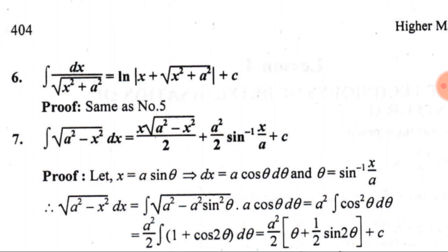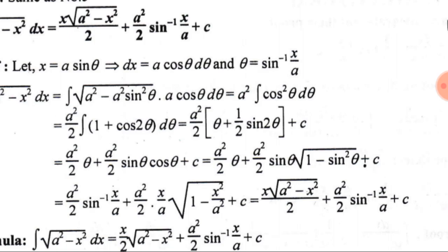Writing 2cos²θ = 1 + cos 2θ and balancing by putting a²/2 in front, we integrate: the integral of 1 with respect to θ is θ, and the integral of cos 2θ is sin 2θ / 2, plus C. Substituting θ = sin⁻¹(x/a), and writing sin 2θ = 2·sin θ·cos θ, we get (a²/2)·sin⁻¹(x/a) + (a²/2)·sin θ·cos θ.